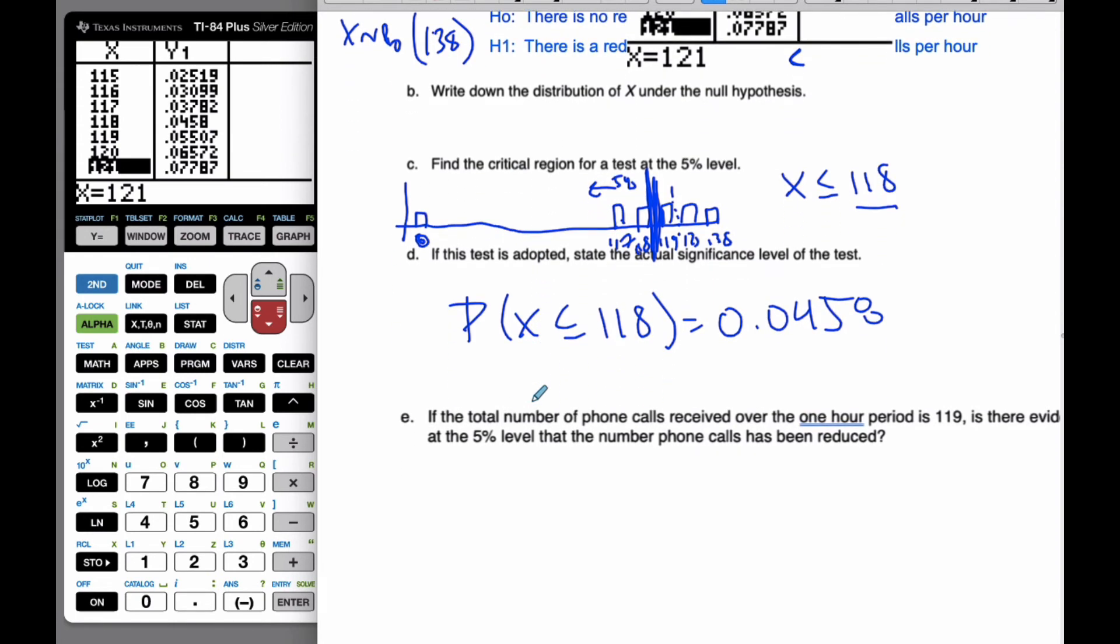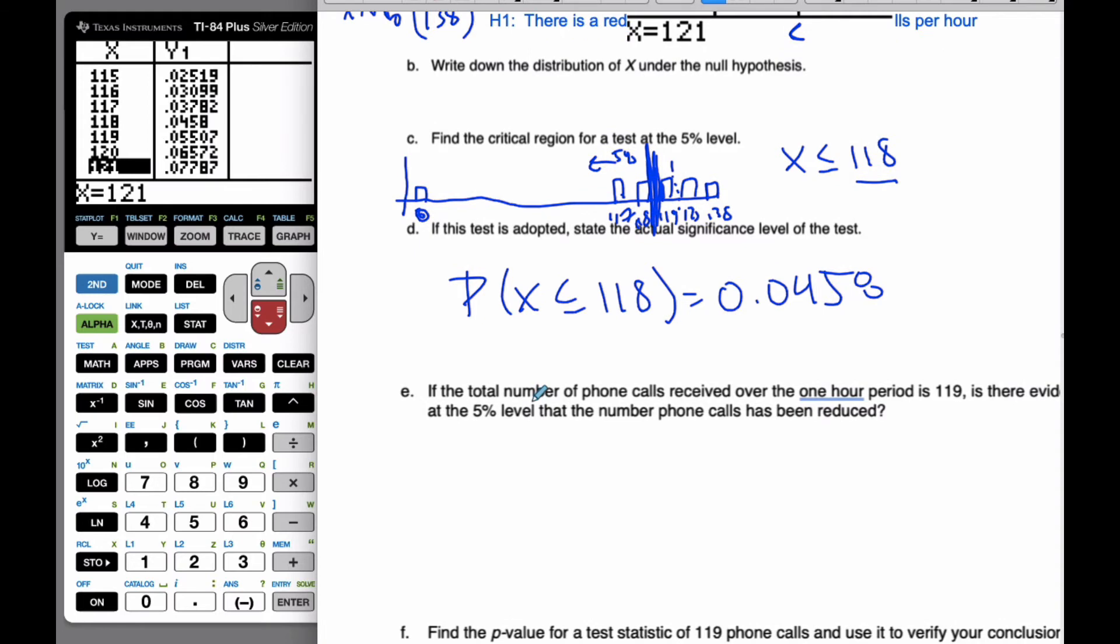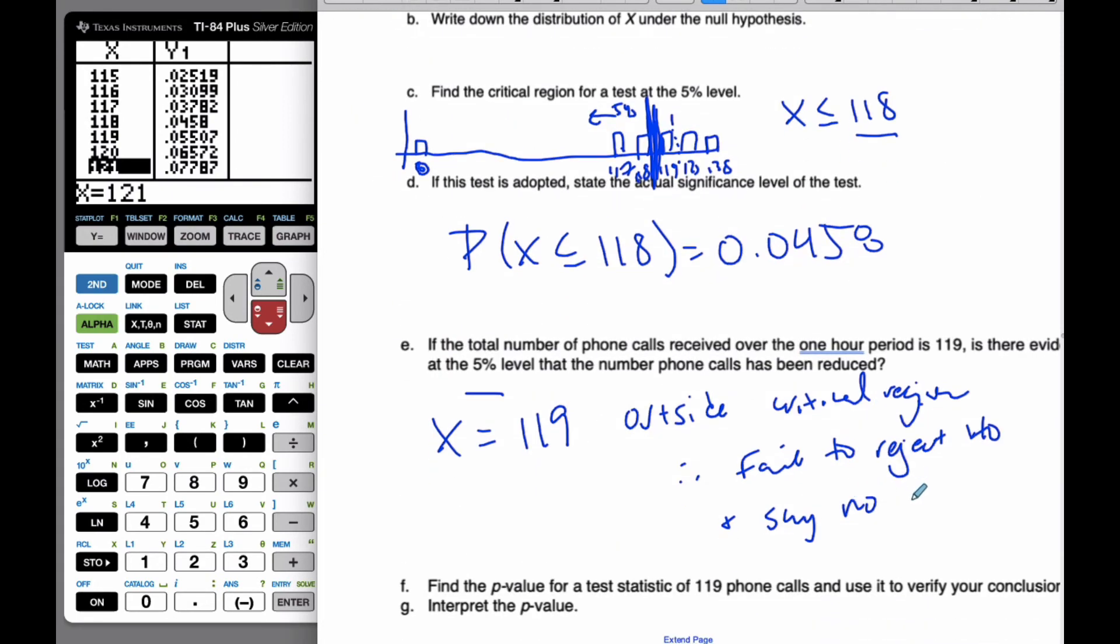Now, if the total number of phone calls received over the one hour period is 119, is there evidence that the number of phone calls has been reduced? So if X equals 119, well, at that point, what we can say is I know if this is true, it is outside the critical region. Therefore, I fail to reject H0 and say no reduction, which is there is no reduction in phone calls for Amazon.